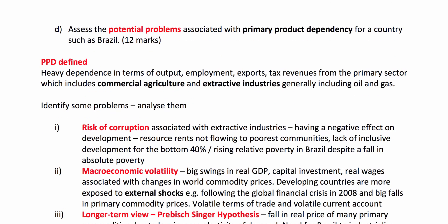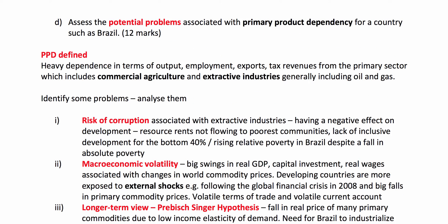Question D: assess the potential problems associated with primary product dependency for a country such as Brazil. When it says 'a country such as', you don't necessarily have to write about Brazil — the best answers clearly will, but you may have studied another country and primary product dependency and can get credit for that too. Key is to define the terms: what is meant by primary product dependency? Heavy dependence on the primary sector in terms of exports, jobs, and tax revenues. Primary commodities include commercial farming, growing industries, and extractive industries such as mining, oil, and gas. Start with the potential problems, analyse them first, and then evaluate.